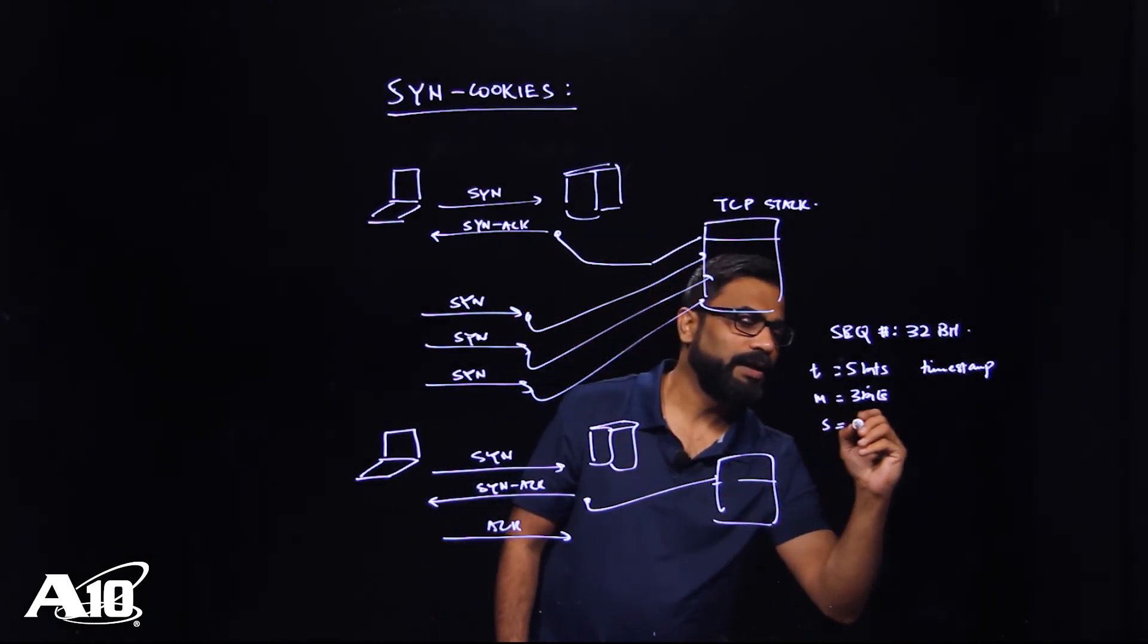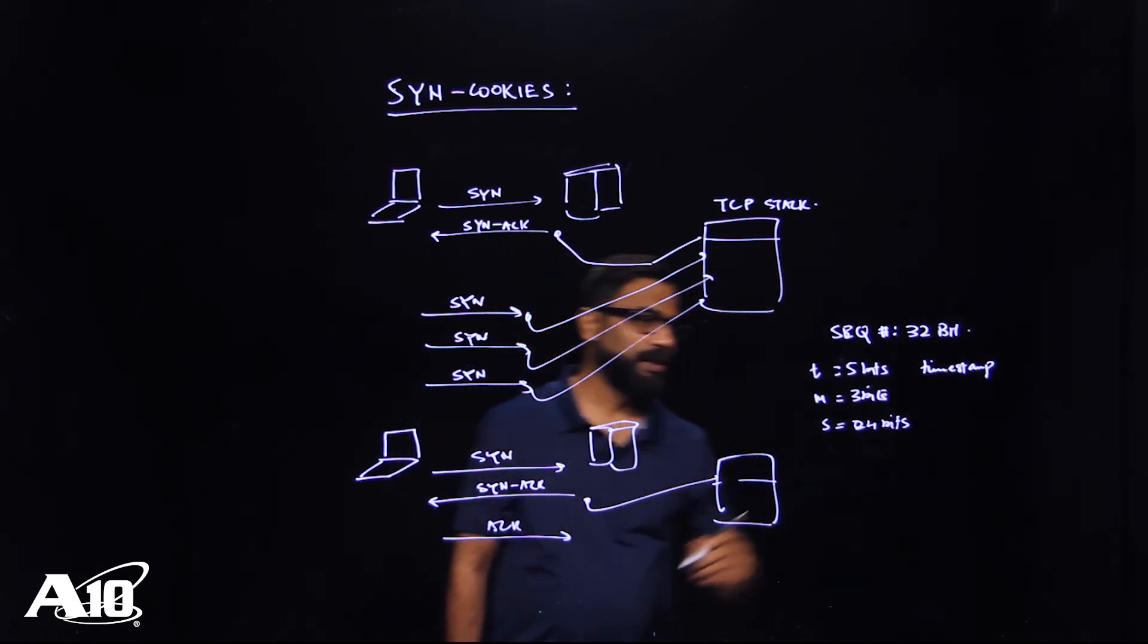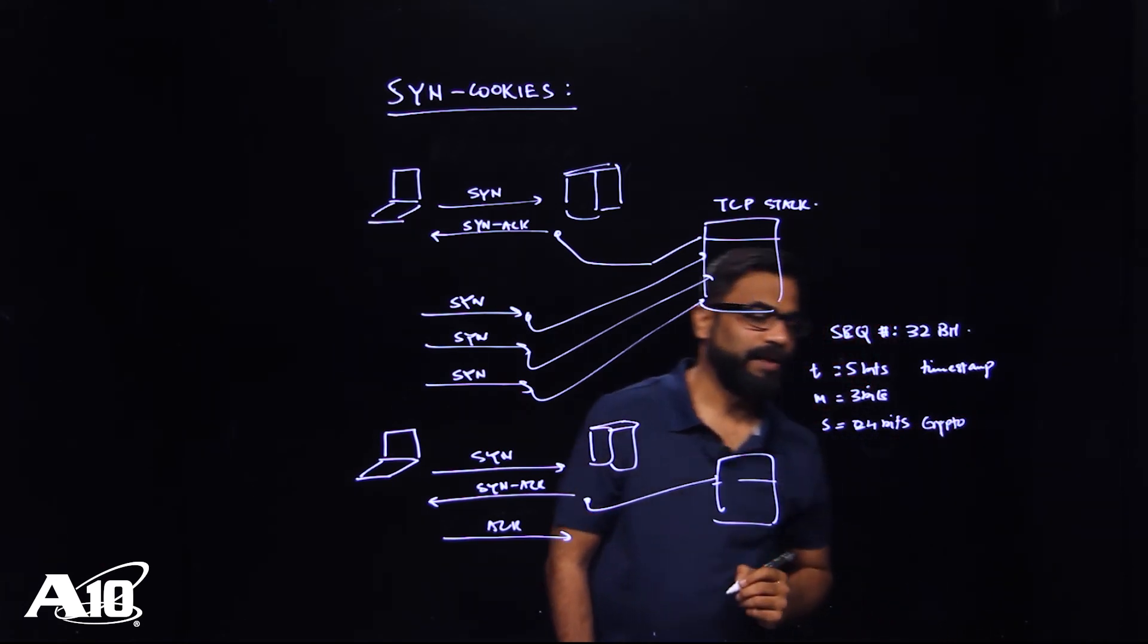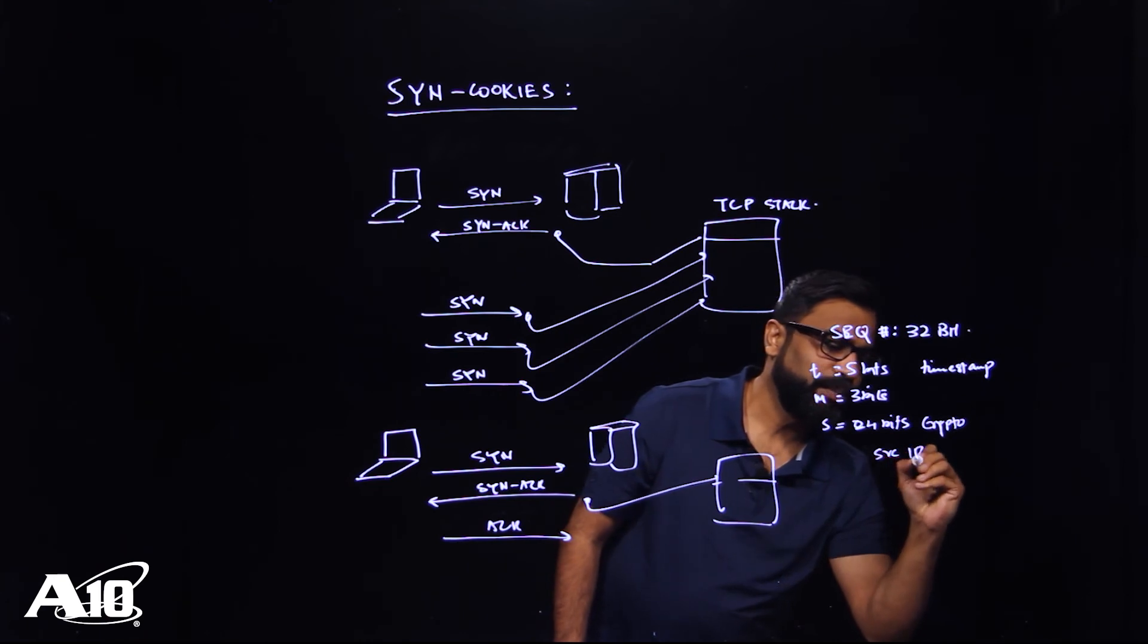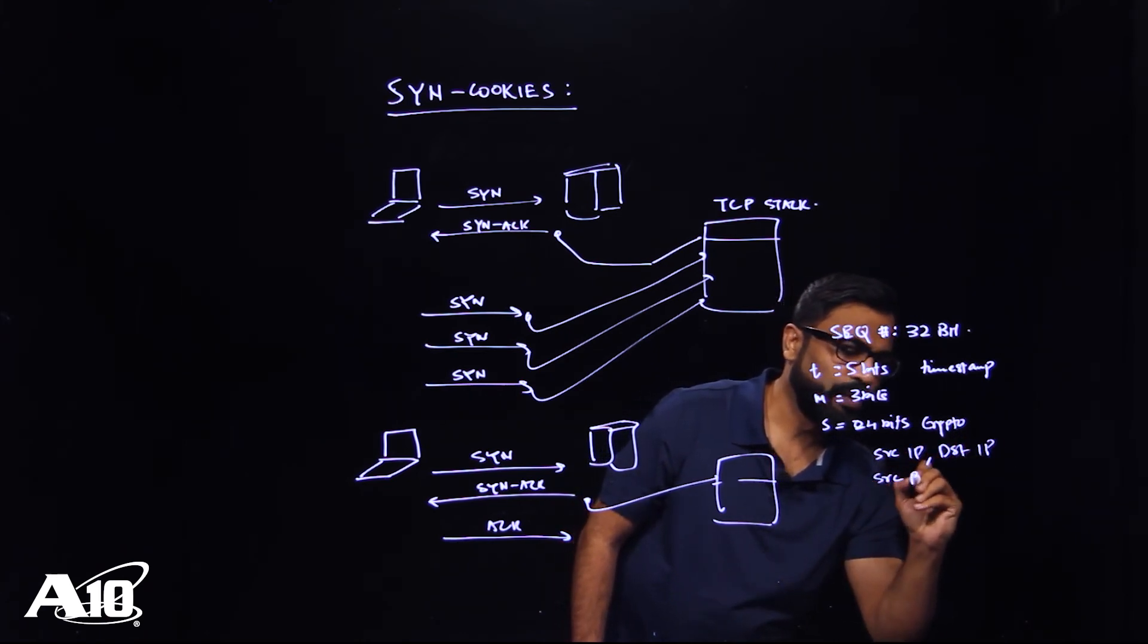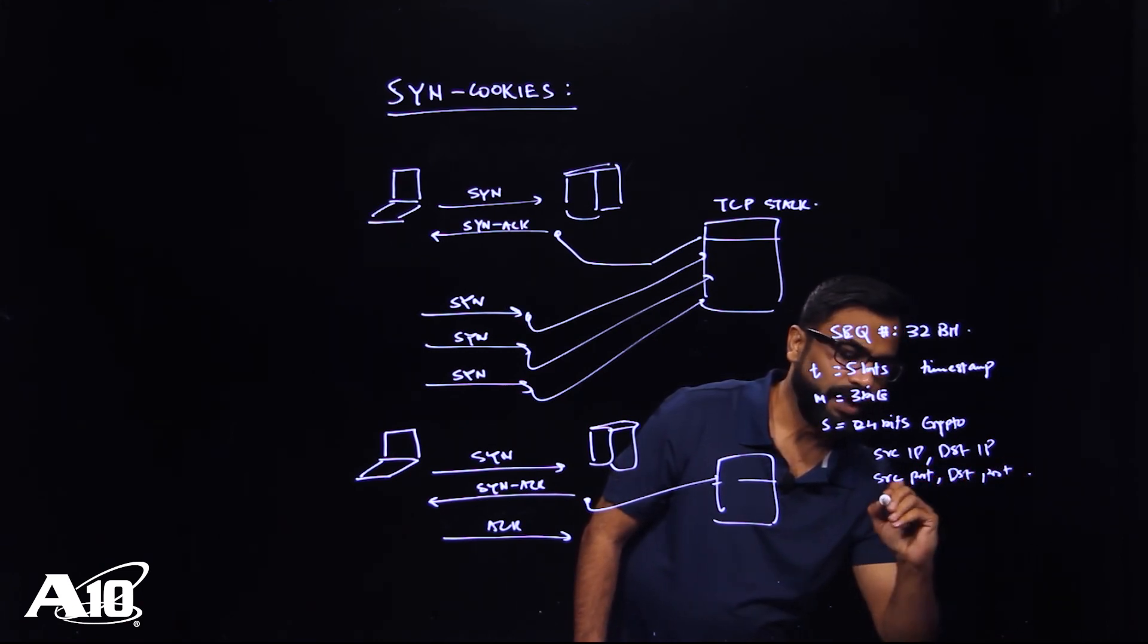And finally, the 24-bit value for the cryptographic hash function. And this cryptographic hash function is actually computed on source IP, destination IP, source port, destination port, and the value of t.